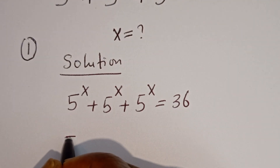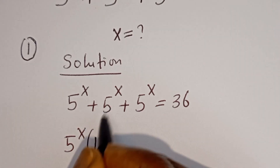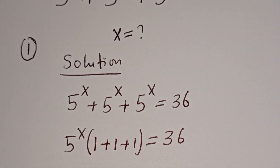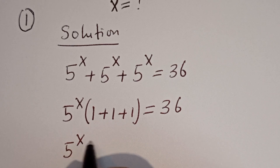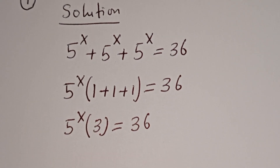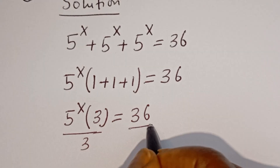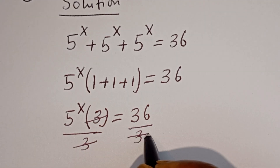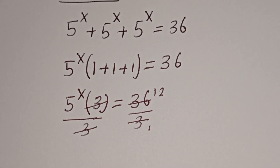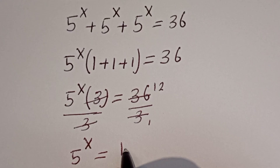5 to the power of X is common — let's bring it out. We have 5 to the power of X, bracket: if we divide each term by 5 to the power of X, we have 1 plus 1 plus 1, which is equal to 36. So 5 to the power of X times 3 is equal to 36. Let's divide both sides by 3 — this cancels, giving us 5 to the power of X is equal to 12.